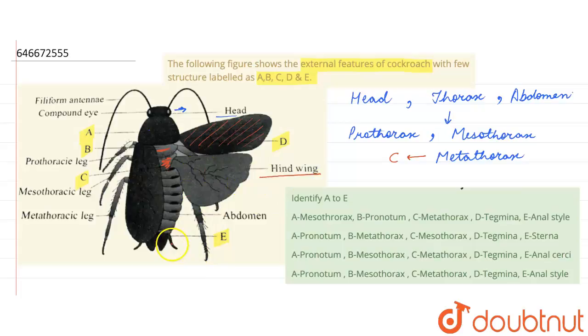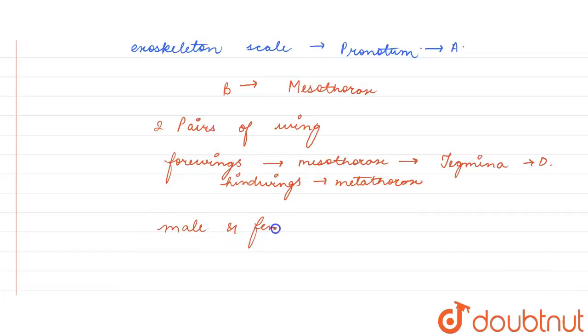And E, they are asking, is this small structure that we see. This is present in both males as well as females and this arise from the 10th segment in abdomen, which is called as the anal cercae. So this is E.